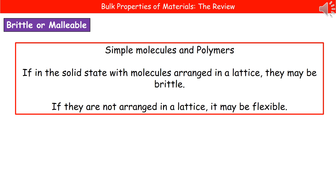If we consider our simple molecules and our polymers — if we're in the solid state with these molecules arranged in a lattice, then there's a really good chance they're going to be brittle. However, if they're not arranged in a lattice, they may be flexible. So in the case of simple molecules and polymers, it does depend on how they're arranged. If they're in lattices, brittle is likely to be the outcome. If they're not in a lattice, they're more likely to be malleable.